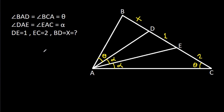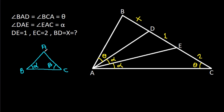In any triangle ABC, if one angle is alpha and another is beta, then the exterior angle will be alpha plus beta.